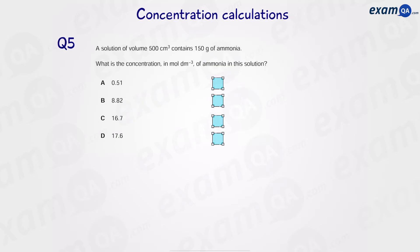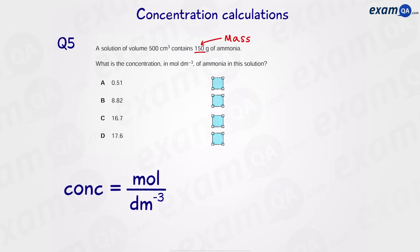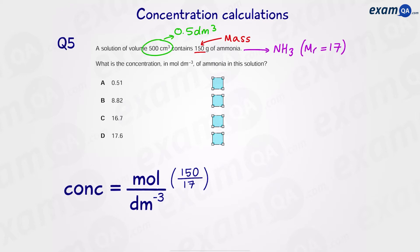Moving on to question five: a solution has a volume of 500 cm³ and contains 150 grams of ammonia. What is the concentration of this solution? To work out concentration we do moles divided by volume in dm³. We find the MR of ammonia from the periodic table, then do 150 over 17 to get the moles. The volume is 500 cm³ or 0.5 dm³. Putting this all together gives us the concentration, and the answer is D.